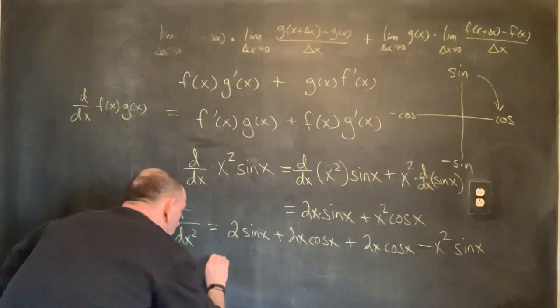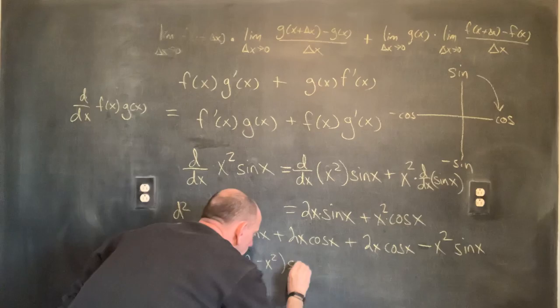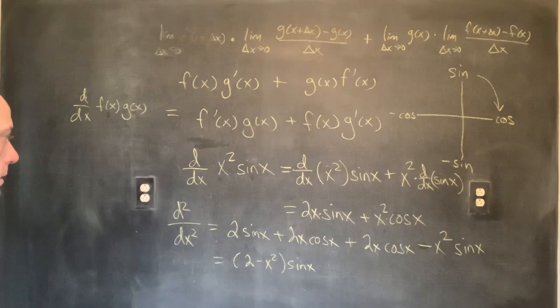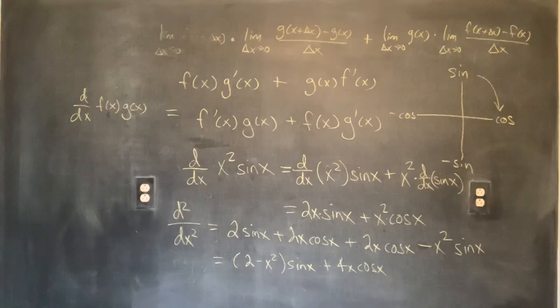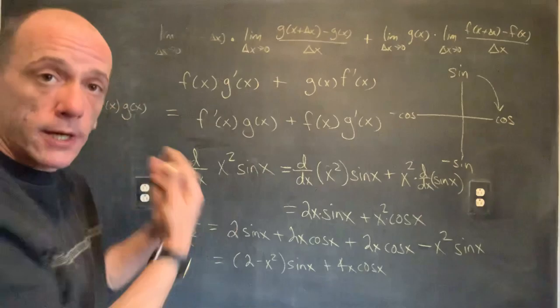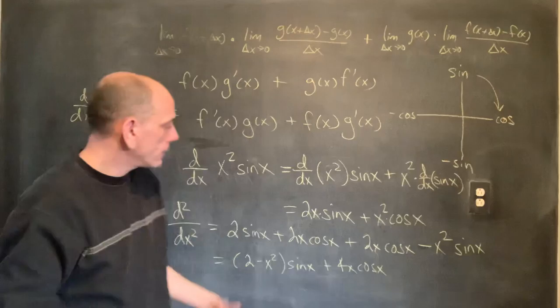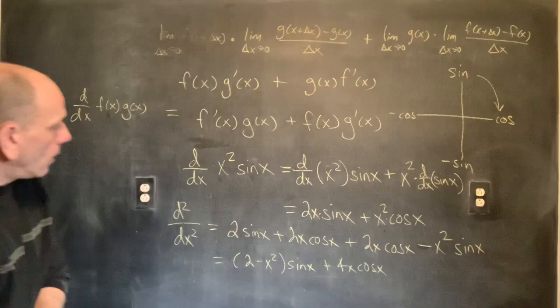Now let's combine like terms. We have 2·sin(x) + 2x·cos(x) + 2x·cos(x) − x²·sin(x), which simplifies to (2 − x²)·sin(x) + 4x·cos(x). On the second derivative, we needed to apply the product rule twice because we had two separate products, and then we just combined like terms.